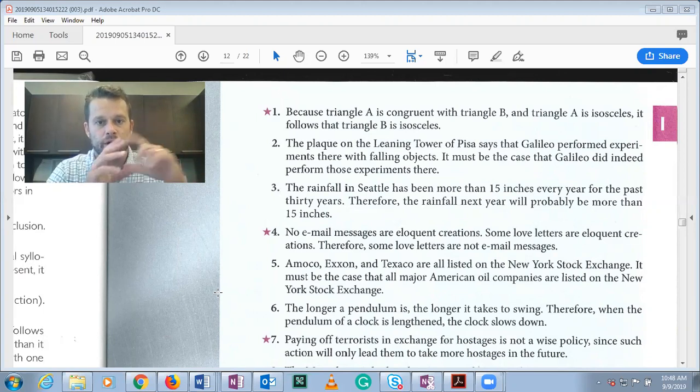We know that if two things are exactly identical and one of them has a certain attribute, that being that it's isosceles, then the other one of necessity must have that same attribute. So this would be valid, a valid inference from geometry.